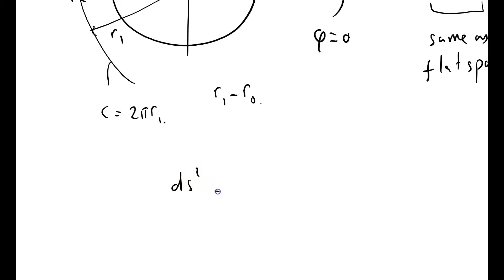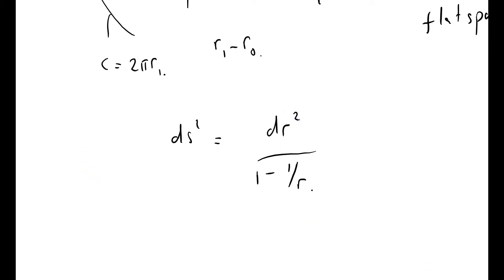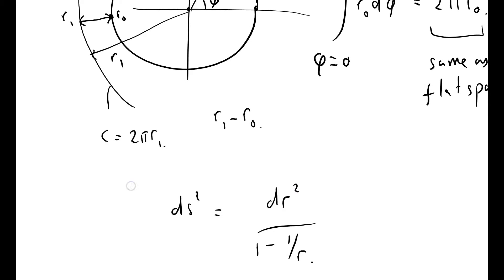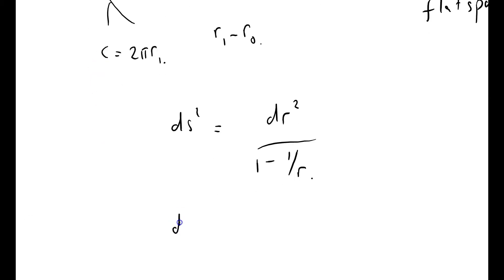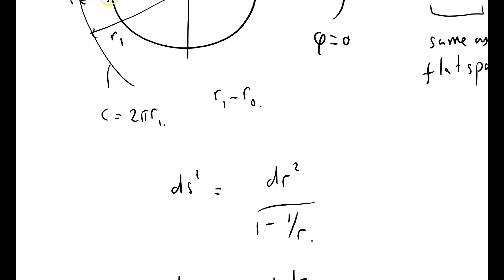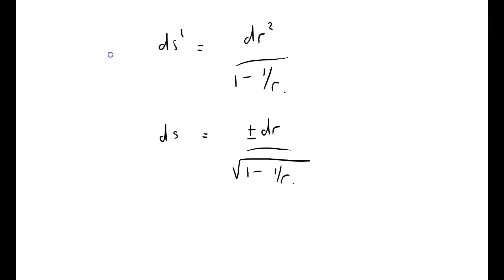We've got ds squared equals dr squared over 1 minus 1 over r. It's just radial motion, so we've got no thetas and no phis, and we're not considering progression in time. And so what that says is that ds equals plus or minus dr over the square root of 1 minus 1 over r. Plus or minus, because you can be going downwards or climbing outwards, depending on which way you go.